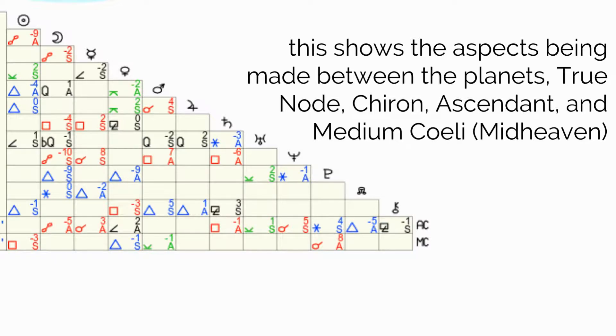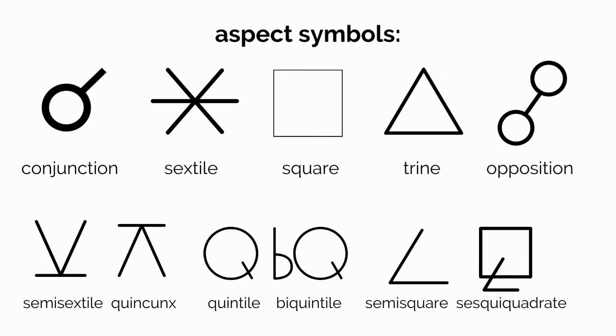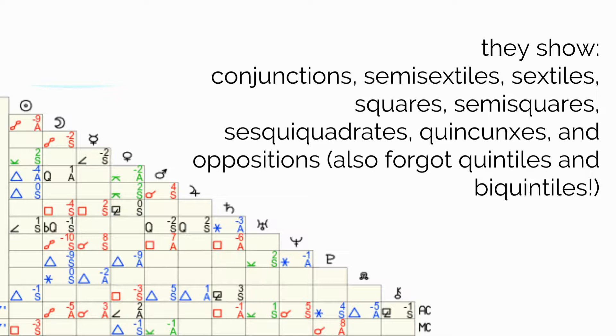They show conjunctions, semi-sextiles, sextiles, squares, semi-squares, sesquiquadrates, quincunxes, and oppositions.